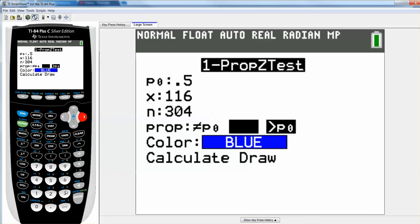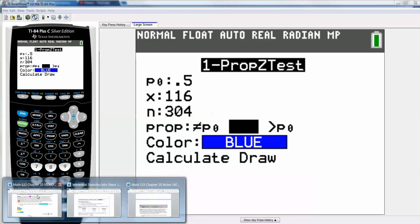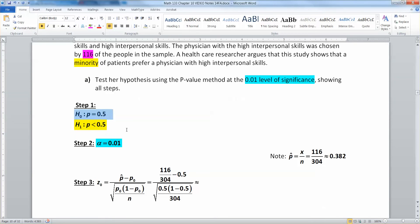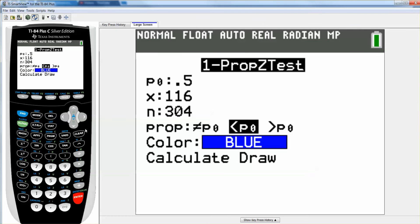And, we're doing a less than test. If you look at your alternative hypothesis, see how it's less than P0? If you go back to your alternative, there you have it. See the less than? P is less than P0. P0 being 0.5 in our case. Then, you go down to calculate and press enter.